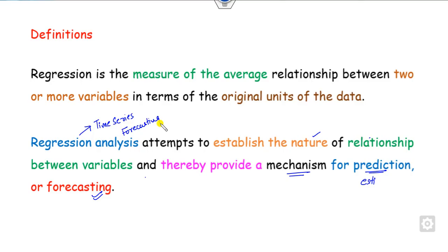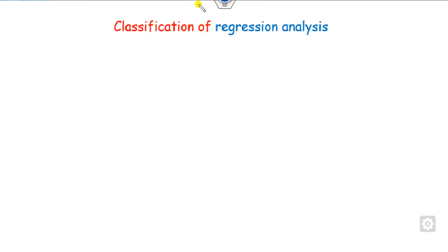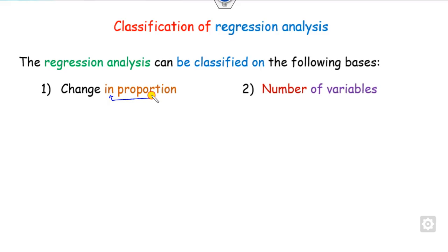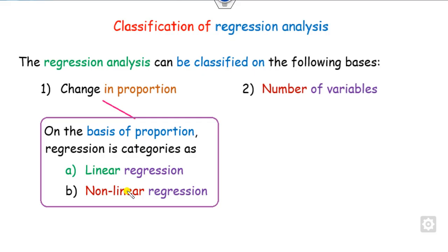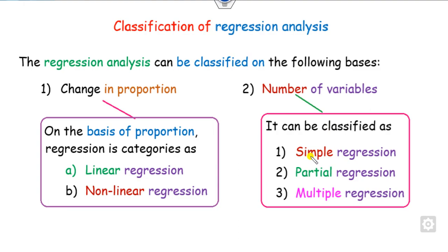What are the classifications of regression analysis? It is divided into two categories: one is based on the change in proportion, and the second is based on the number of variables. Under change in proportion, it is further classified as linear or non-linear. Under number of variables, it is classified into three: simple, partial, and multiple. We will describe all five models in this presentation.